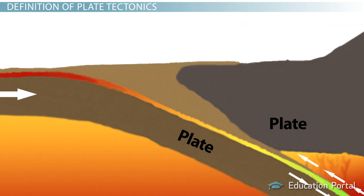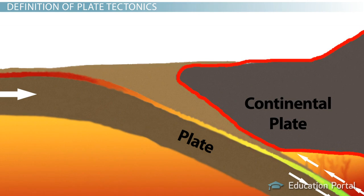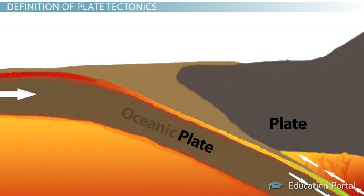Each plate's thickness depends on the type of crust it is made of and the location of the plate. Continental plates can be up to 150 kilometers thick, whereas oceanic plates usually average about 5 to 10 kilometers thick.